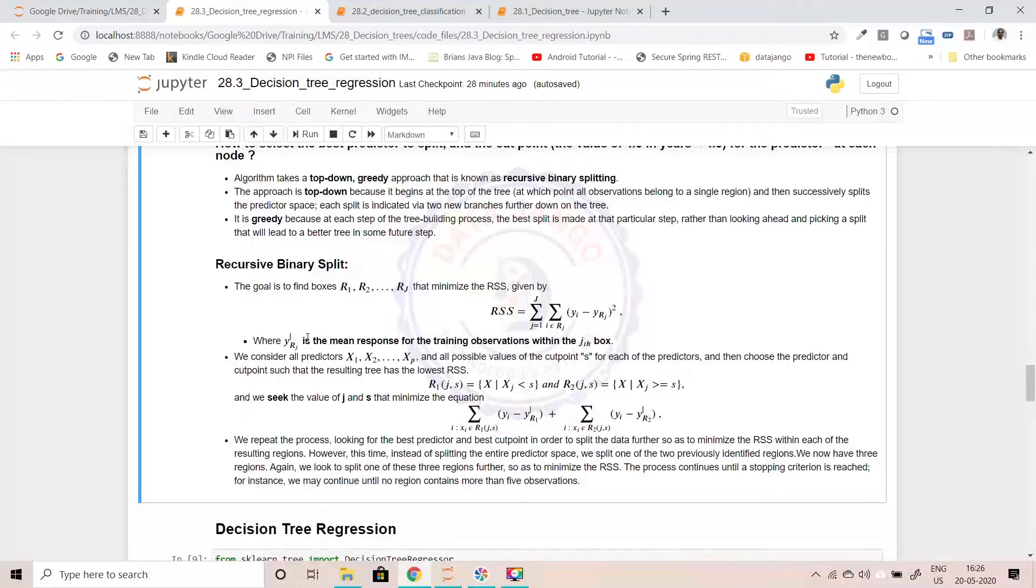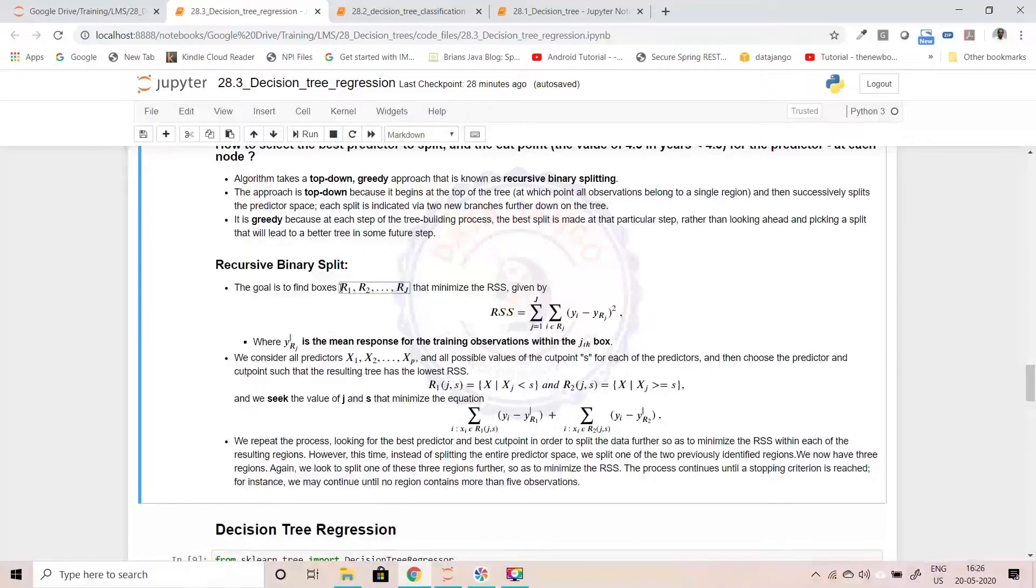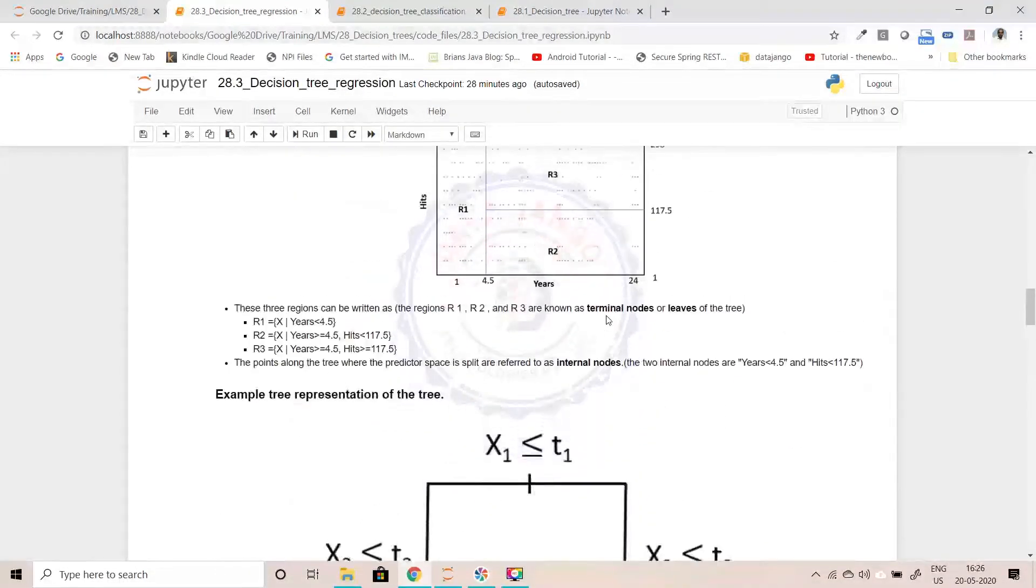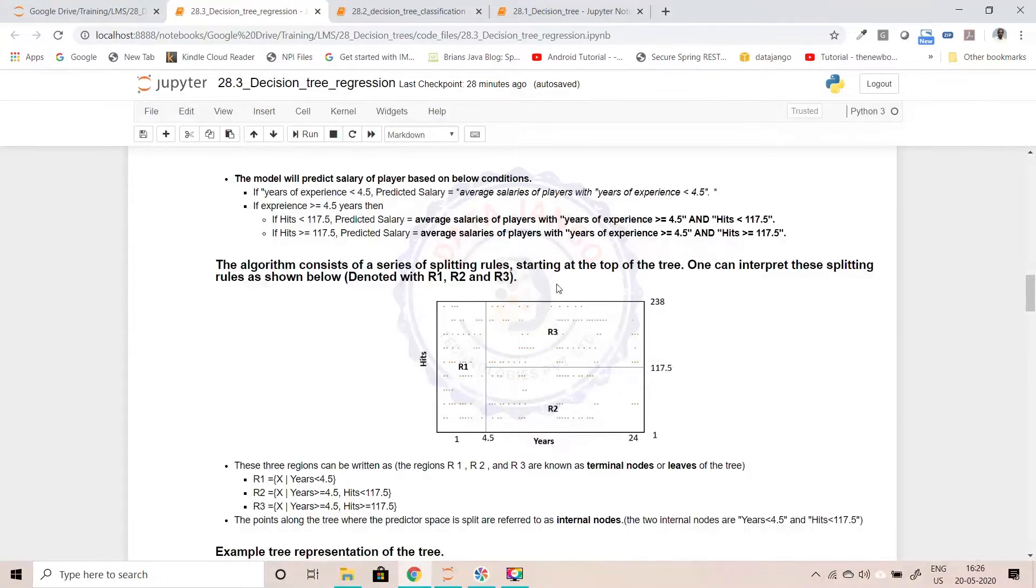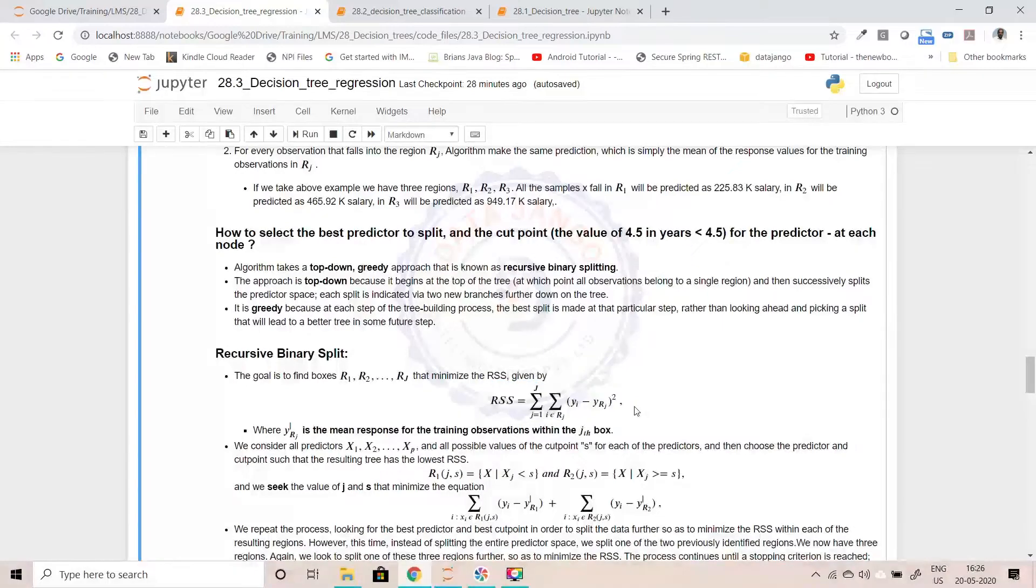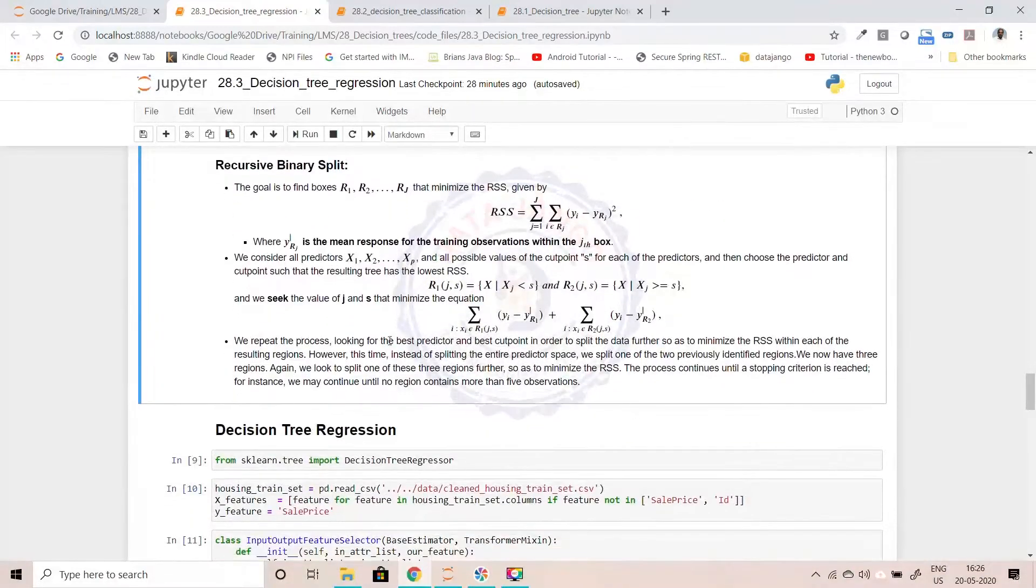So recursive binary tree, let me read through this and whatever theory I explained. The goal is to find the regions R1, R2 and Rj that minimize the RSS given by this formula. The goal is to split data like this while keeping the RSS minimal, the error minimal, total error minimal.